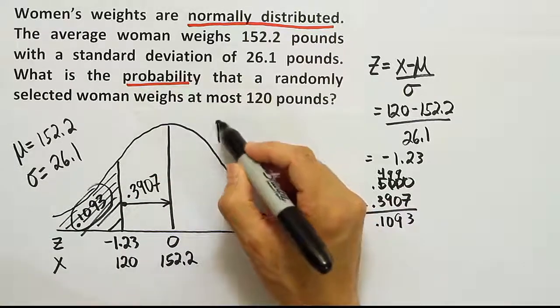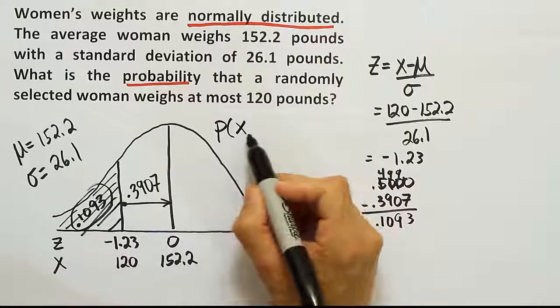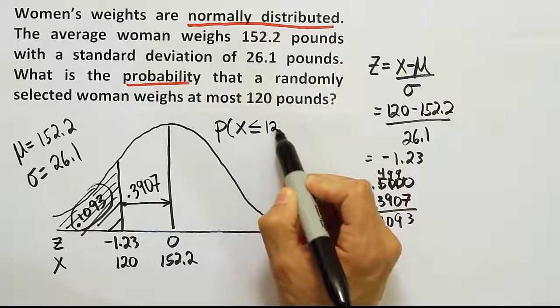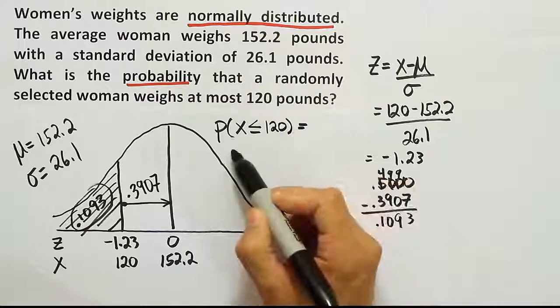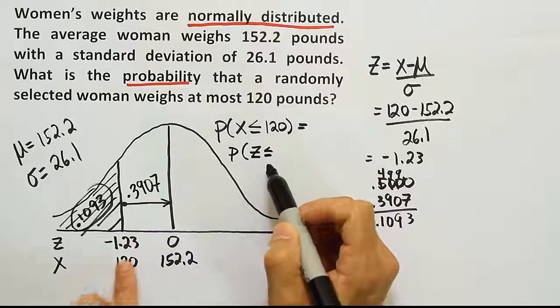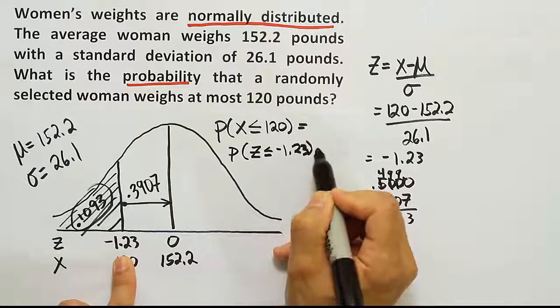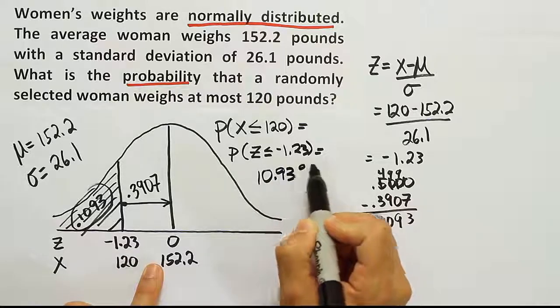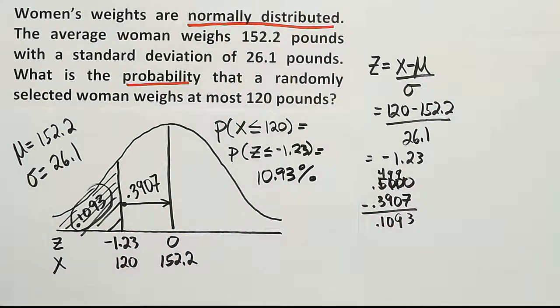We know now the probability that a woman's weight is less than or equal to 120 pounds is the same as the probability that a z-score is less than or equal to negative 1.23. And that turns out to be 10.93%, so around 11% of women weigh 120 pounds or less.